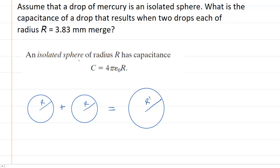In order to determine the capacitance of the drop that results when two drops of mercury merge together, we have to remember that the capacitance of an isolated sphere is given by the following equation. We can see that the capacitance equals 4π times a constant times the radius of that sphere.